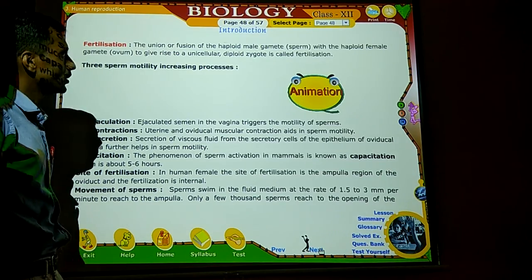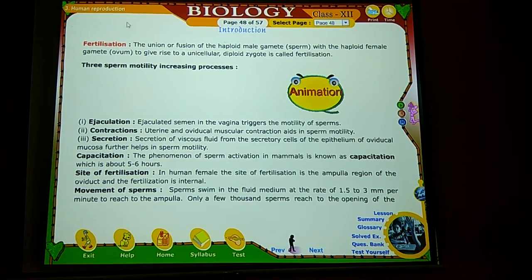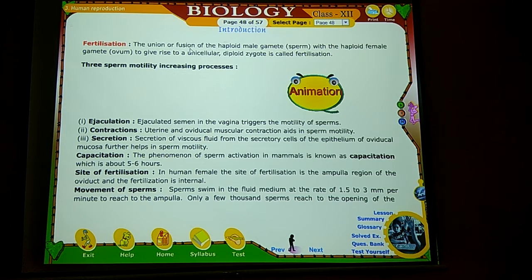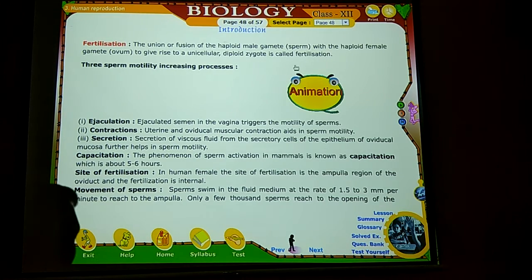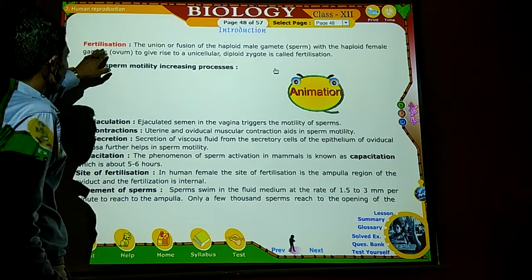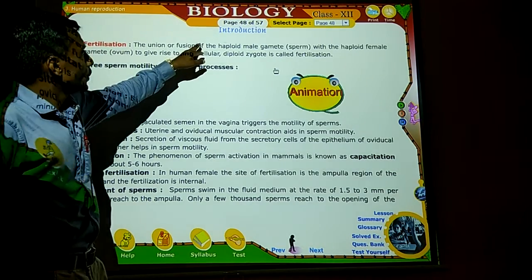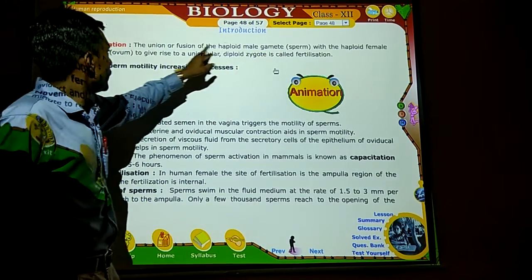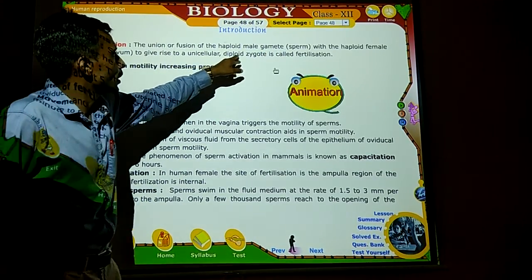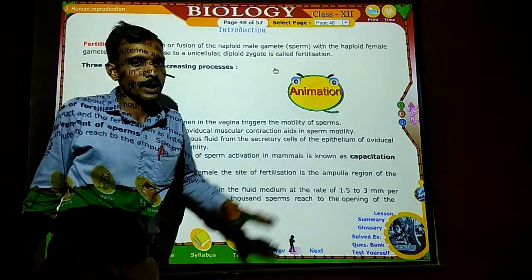What is fertilization? Fertilization is a process — the union or fusion of the haploid male gamete, that is the sperm, with the haploid female gamete, that is the ovum, to give rise to a unicellular diploid zygote. So the simple definition: the union or fusion of the male gamete with the female gamete to form the diploid zygote is called fertilization.